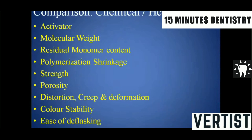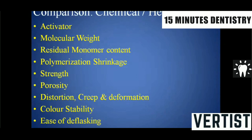A common exam question involves comparing chemically activated and heat-activated denture base resin. Key comparisons: the activator in chemical cure is N,N-dimethyl-p-toluidine, while heat acts as the activator for heat cure. Molecular weight is relatively less for chemical cure and more for heat cure. Residual monomer content is higher in chemical cure and lower in heat cure. Polymerization shrinkage is less in chemical cure due to residual monomer, and more in heat cure.